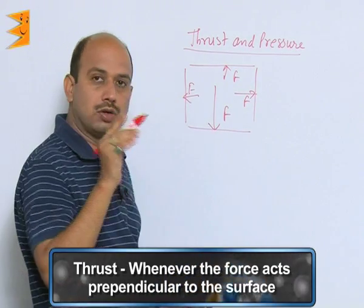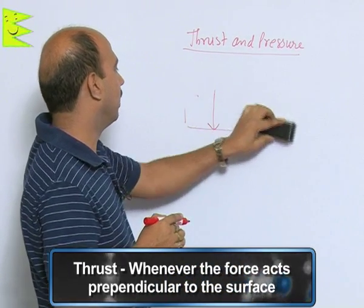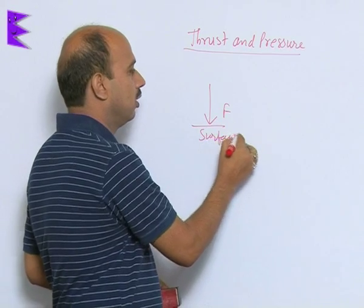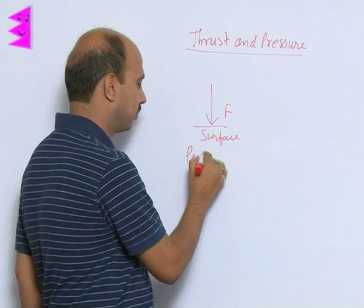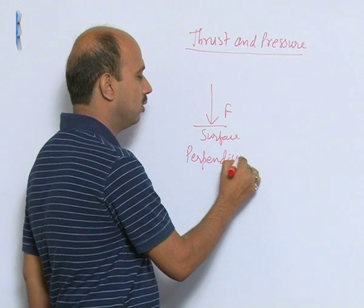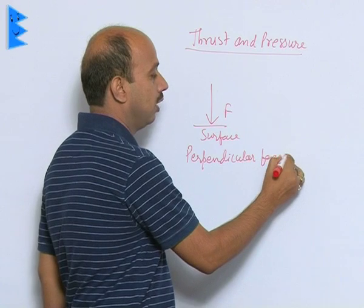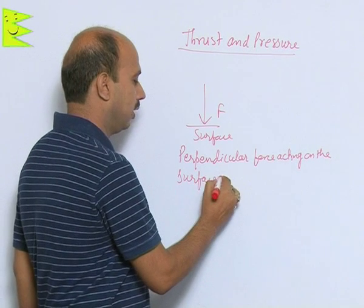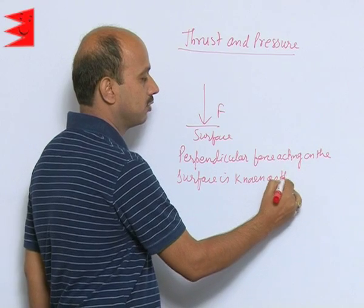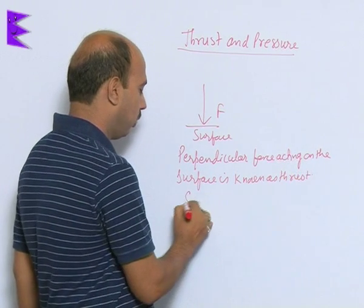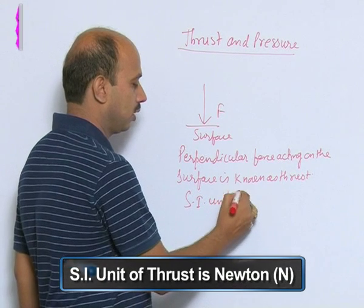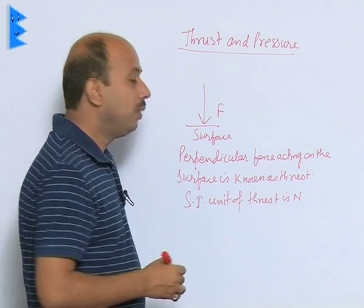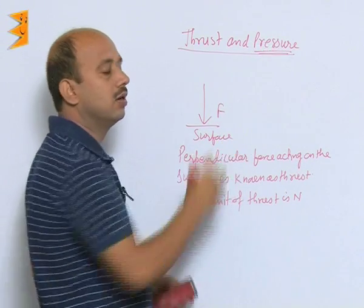If the force is perpendicular to any surface, we can say that it is actually thrust. So, the perpendicular force acting on the surface is known as thrust. The SI unit of thrust is Newton, because it is a force. After thrust, there is one more quantity, that is pressure.